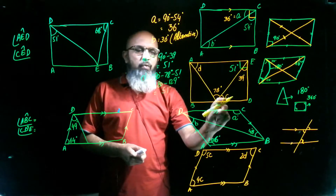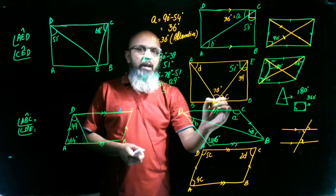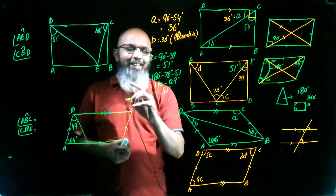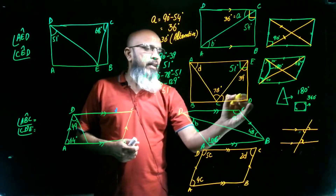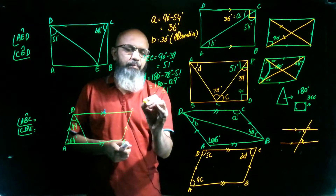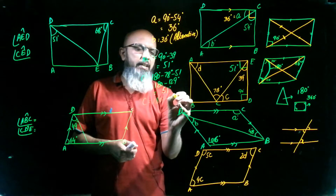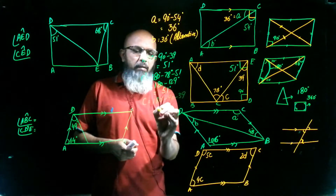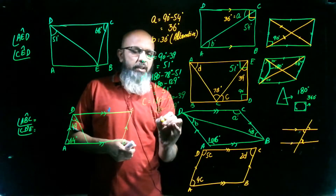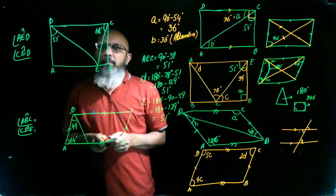Now we need to find angle C. Triangle ACD has angles summing to 180 degrees. One angle is the right angle of 90 degrees and another is 39 degrees. So angle C equals 180 minus 90 minus 39, which gives 51 degrees.